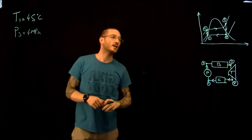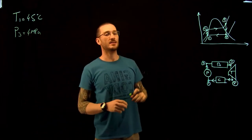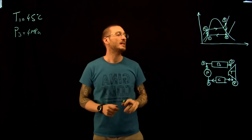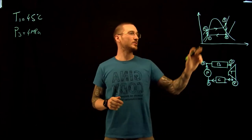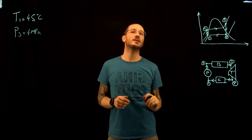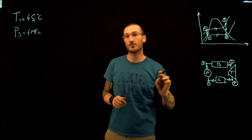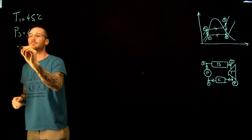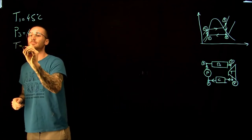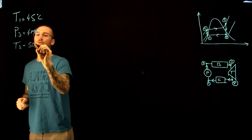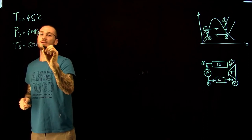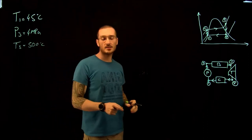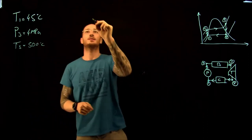Finally, the maximum temperature is 500°C. The maximum temperature is at the exit of the boiler, at point three: T₃ = 500°C. What they're asking us to solve for is the thermal efficiency.